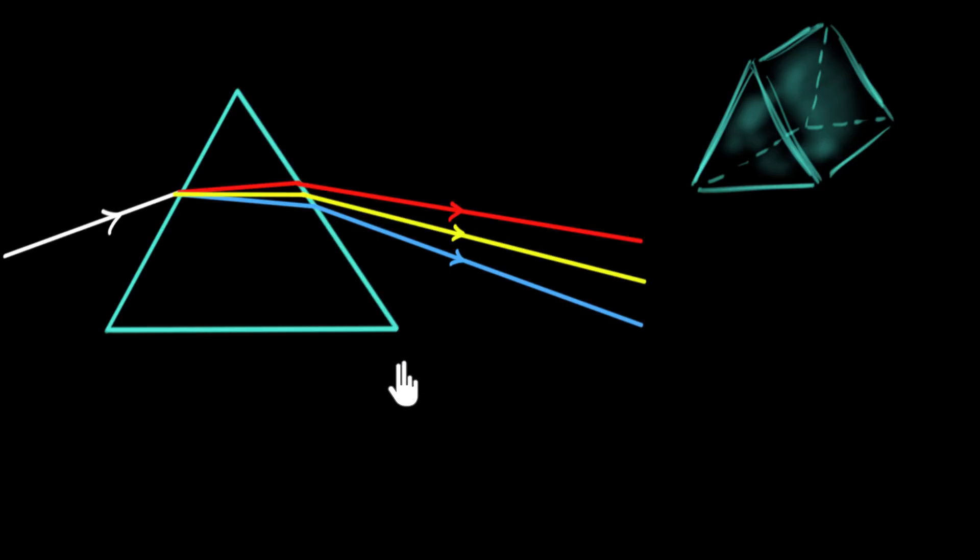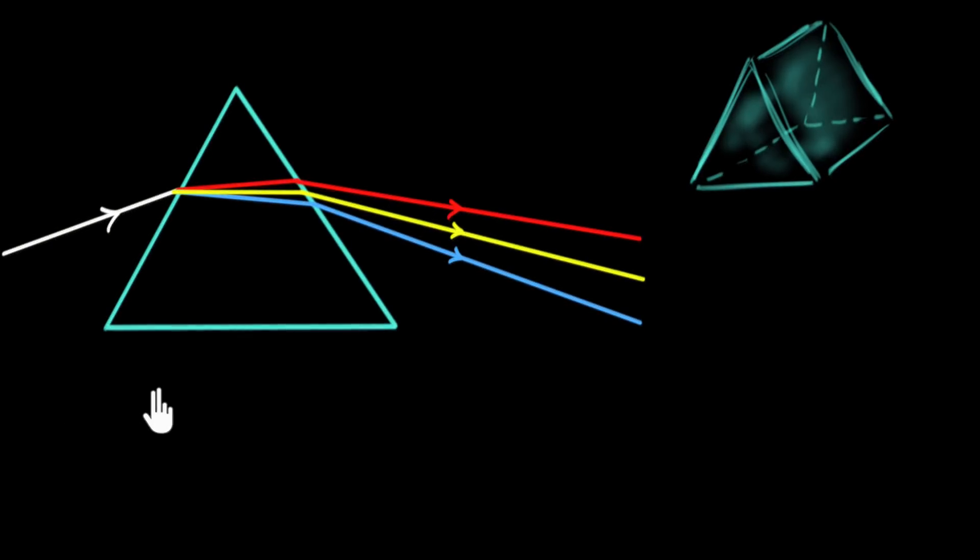So what we're gonna explore in this video is how did we figure out that that prism doesn't create colors, but the colors were already present in the white light, and the prism is just bending them differently. It takes a genius to figure out that this theory that the prism is creating colors is actually wrong. And that genius is no other than Sir Isaac Newton.